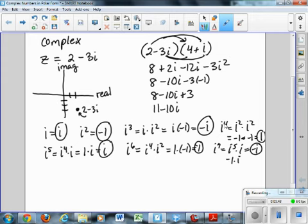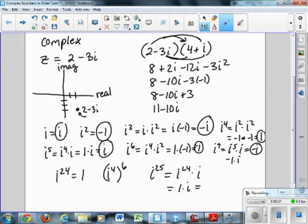So for example, if i to the 24th, that's going to just be 1, because that's i to the 4th to the 6th power, which is 1 to the 6th. If I have i to the 25th, it's going to be i to the 24th times i, which is 1 times i, or just i. So that's how you work with powers of i.